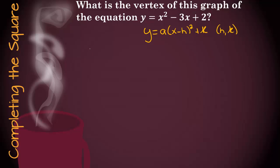The first thing I'm going to do is write the equation. y equals x squared minus 3x plus 2. We need to subtract 2 from both sides. So y minus 2 equals x squared minus 3x.